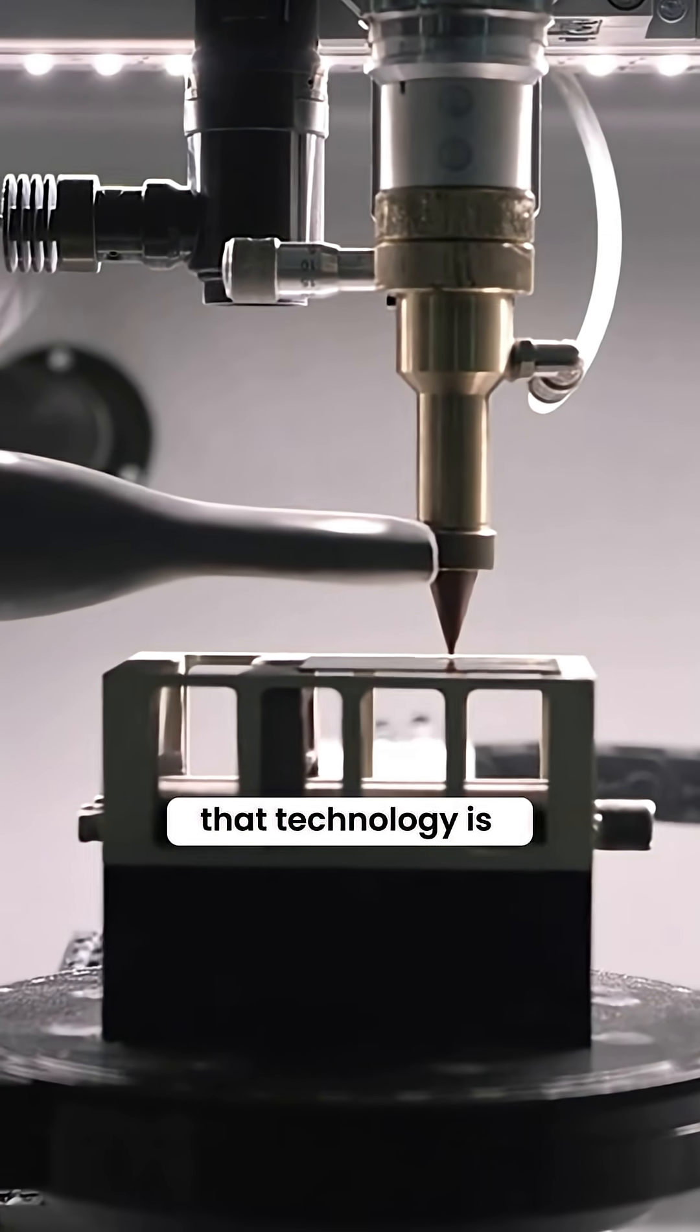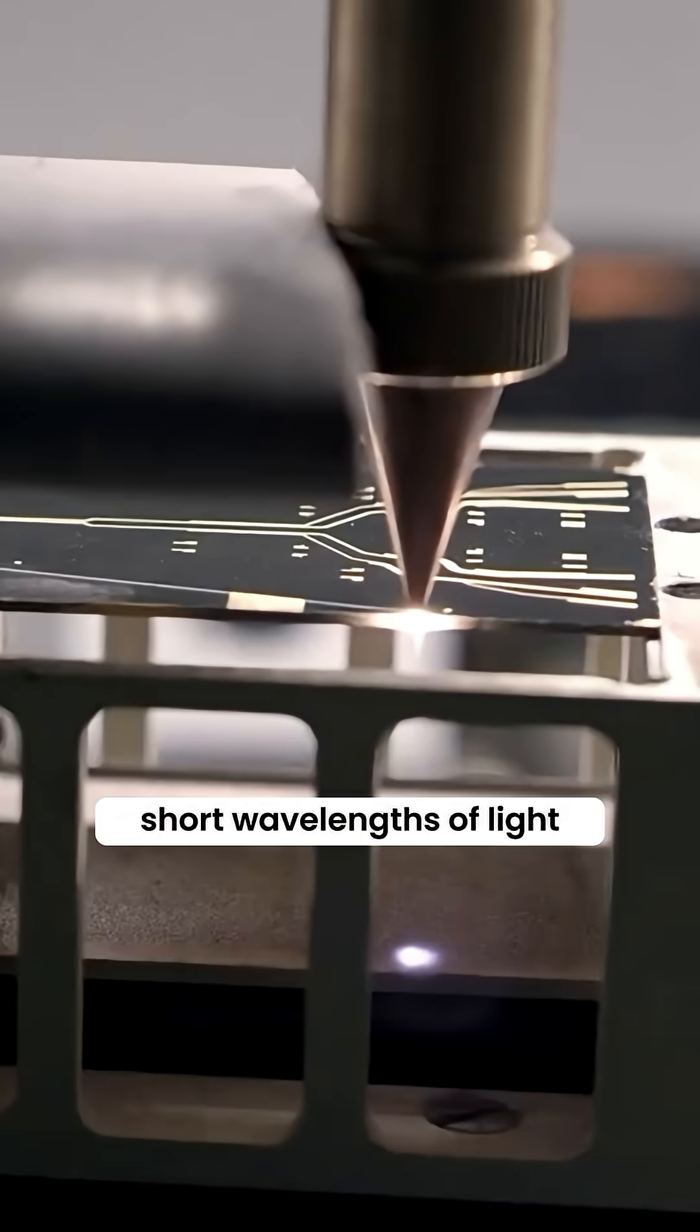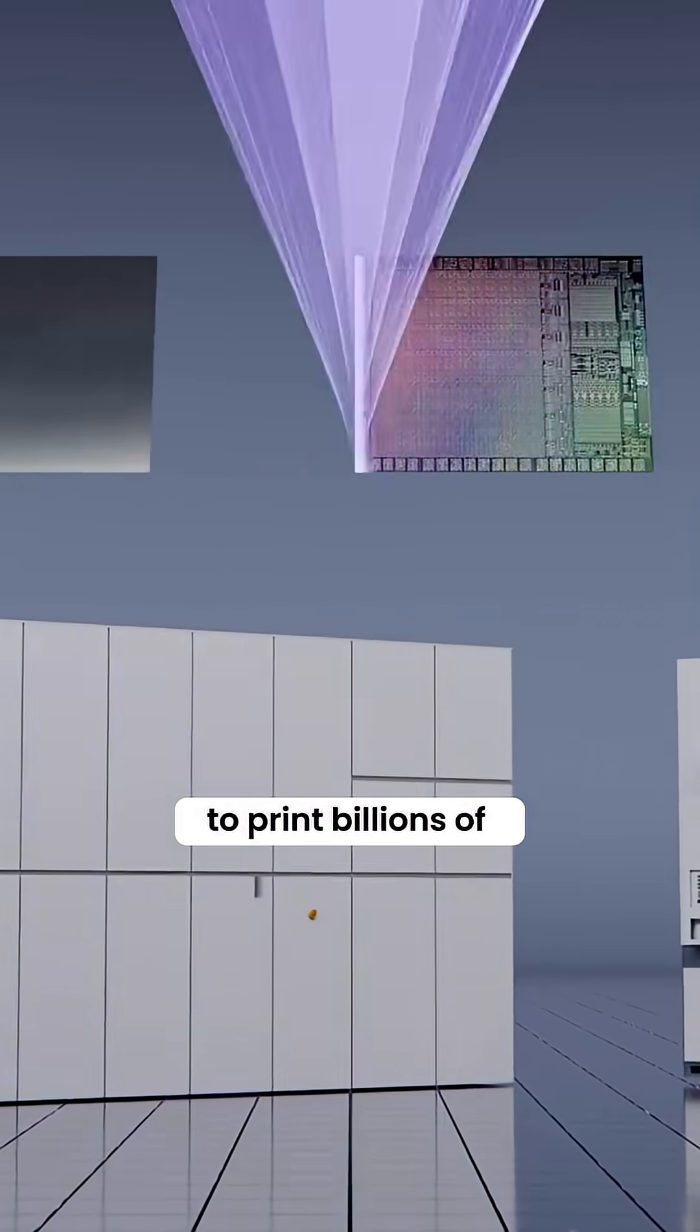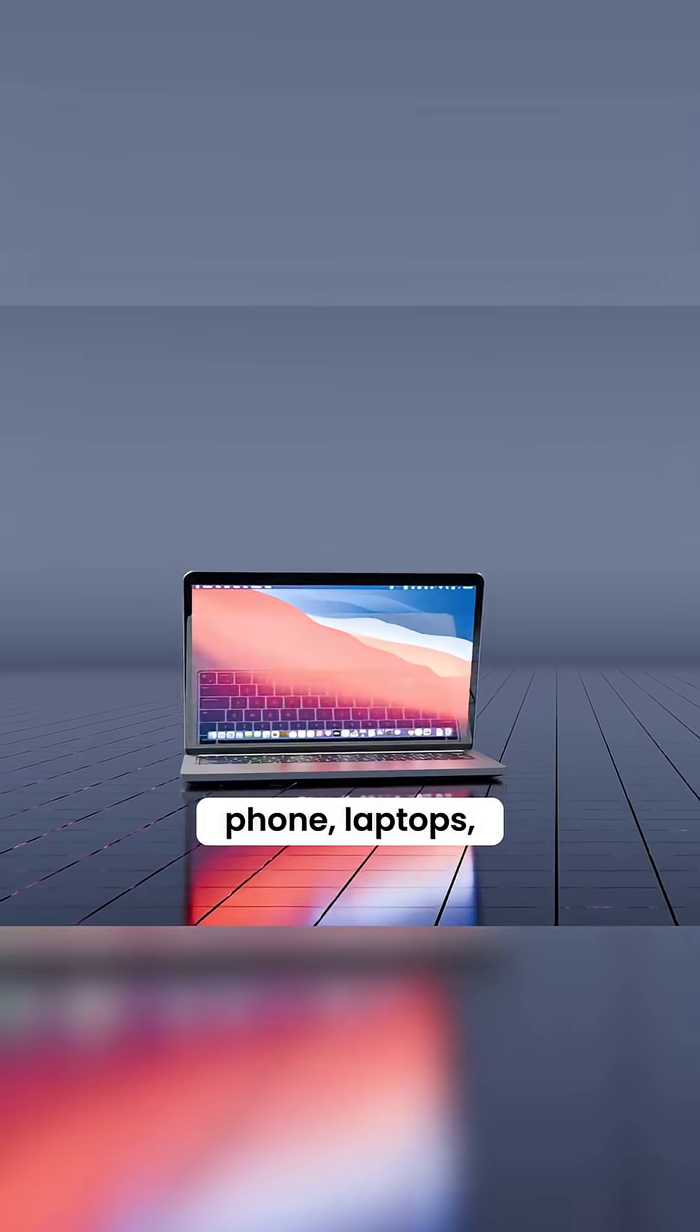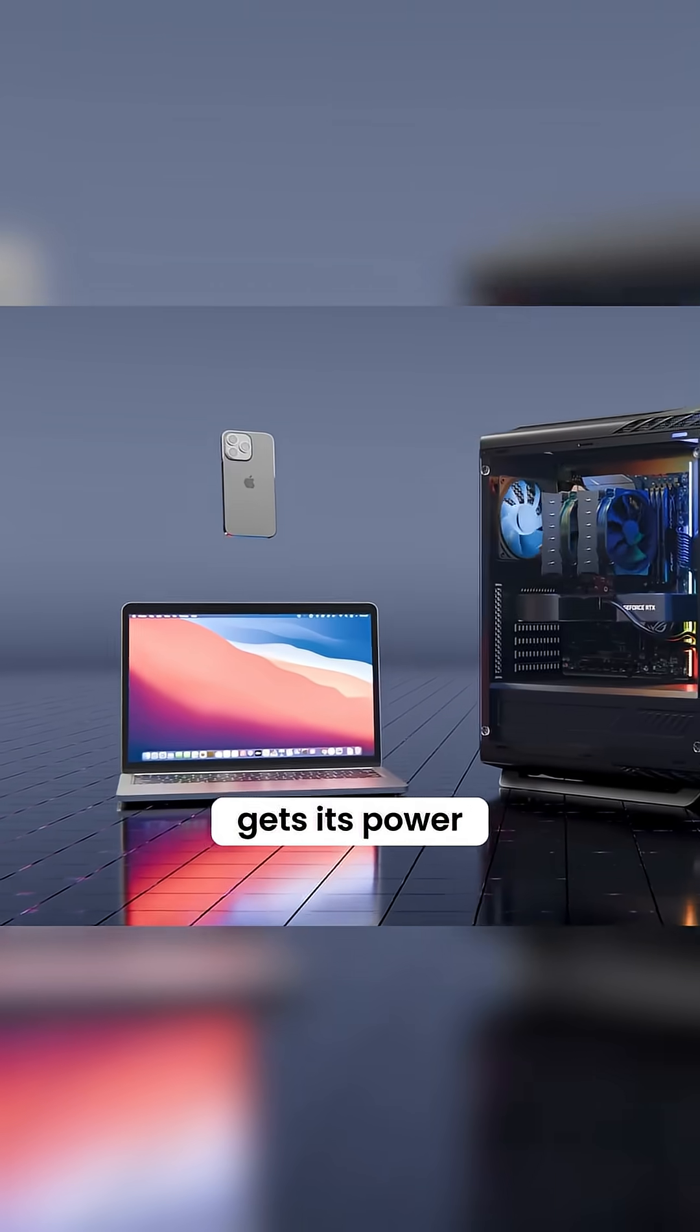Their technology is called UV lithography. It uses extremely short wavelengths of light to print billions of tiny transistors onto chips. That's how your phone, laptops, AI processors, basically everything, gets its power.